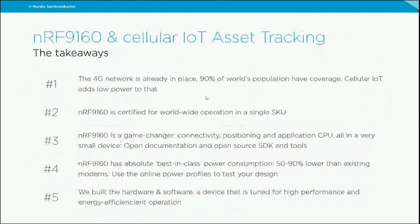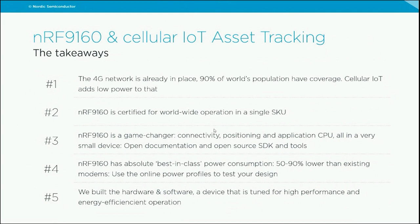In summary: cellular IoT is really part of the 4G network, already in place worldwide, with really low-power capabilities added. The NRF9160 is certified for worldwide operation — with a single part number you can build a product and deploy it anywhere in the world. We don't only have a modem and connectivity; we have positioning, an application MCU for your own application, and all documentation, SDK, and tools are open and publicly available — enabling a big and diverse set of asset tracker applications.